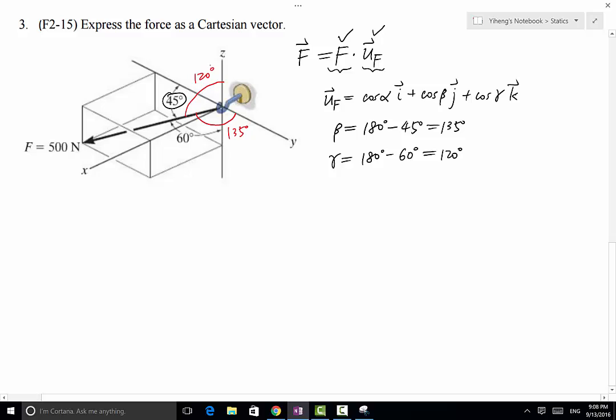So what's missing is alpha, which is the angle made by the force with the positive x direction. You need to take a look at this image and realize that alpha is an acute angle. In other words, it is smaller than 90 degrees. That's information you have to read from the graph.